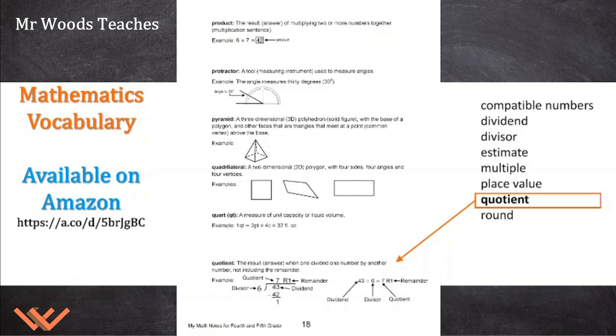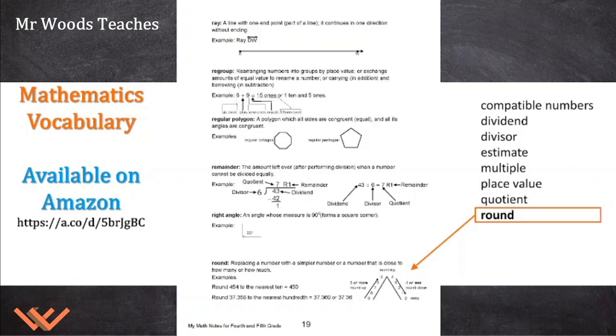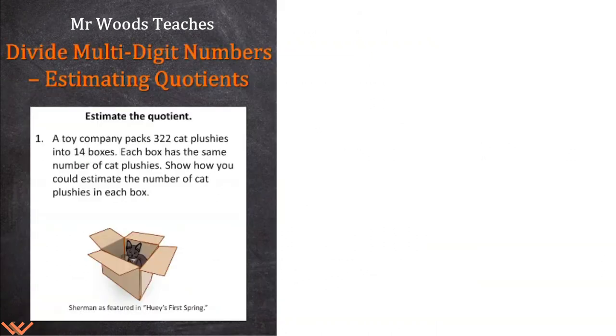Quotient. The quotient is the answer to a division problem, less the remainder. So the remainder is something that's separate. Round, it's replacing a number with a simpler number, or a number that's close to how many or how much. Let's take a look at this problem now. Estimate the quotient. A toy company packs 322 cat plushies into 14 boxes. Each box has the same number of cat plushies. Show how you could estimate the number of cat plushies in each box.